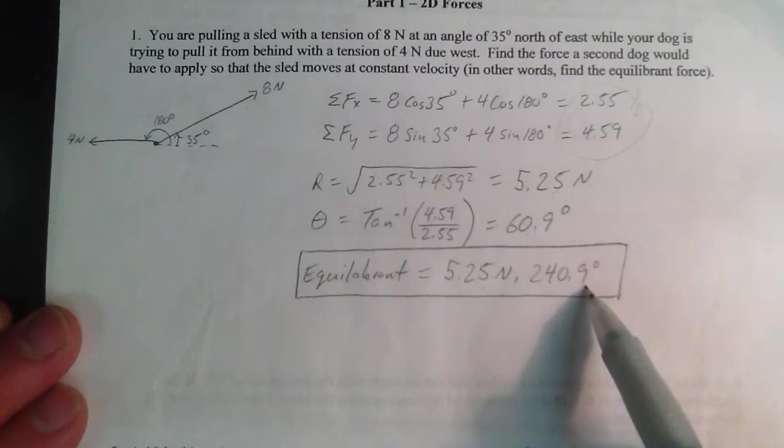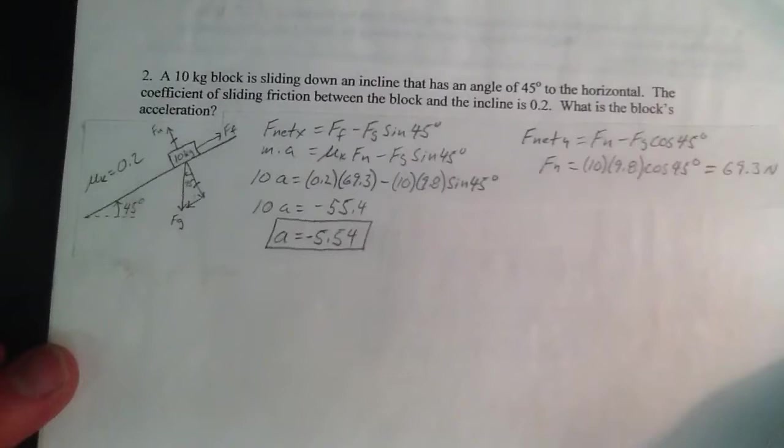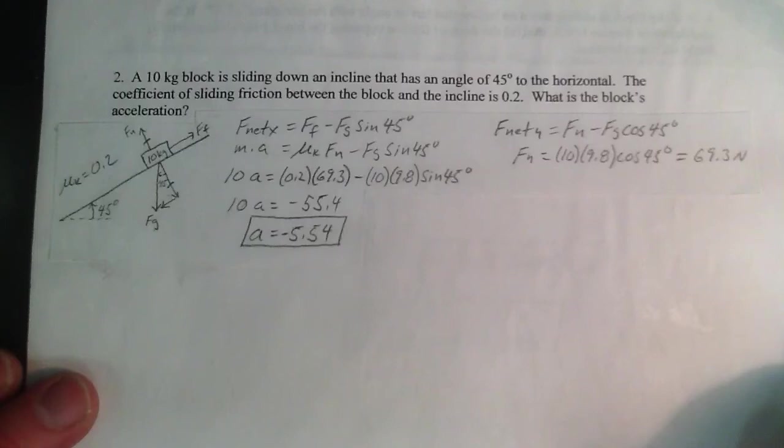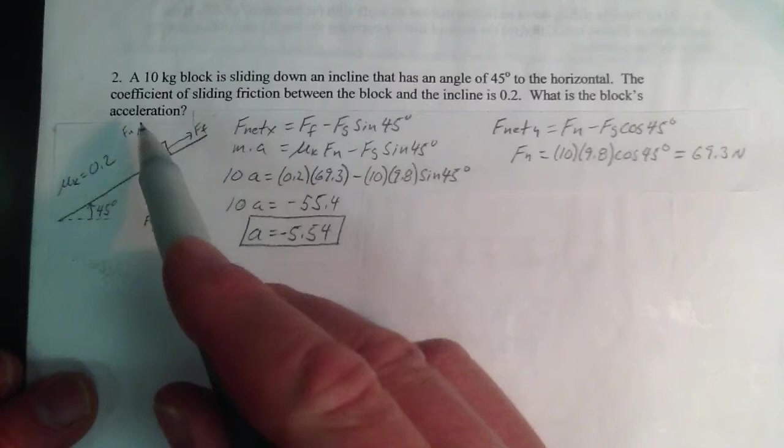Put that in vector format, and it's got a magnitude of 5.25 newtons at 60.9 degrees. How am I going to cancel that out? My third force has to be same magnitude, opposite direction. Lots of problems like this. We should be pretty proficient at these by now.